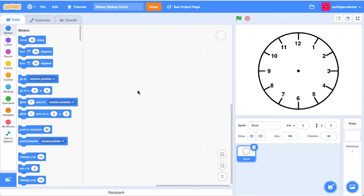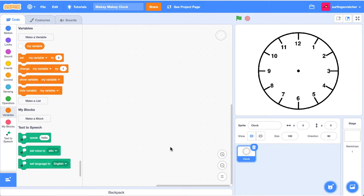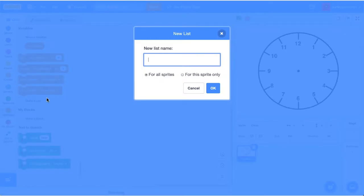Over here in Scratch, I've just got an empty project and I've gone ahead and googled clock face and just grabbed an image to put on the stage. We won't actually be using this image, but I just thought it'd be nice to have a clock face there. The first thing I want to do is map each of the keys of the Makey Makey to a spot on the list. Let's go over to the variables category. I'm going to create a new list and we're going to call this one minutes.